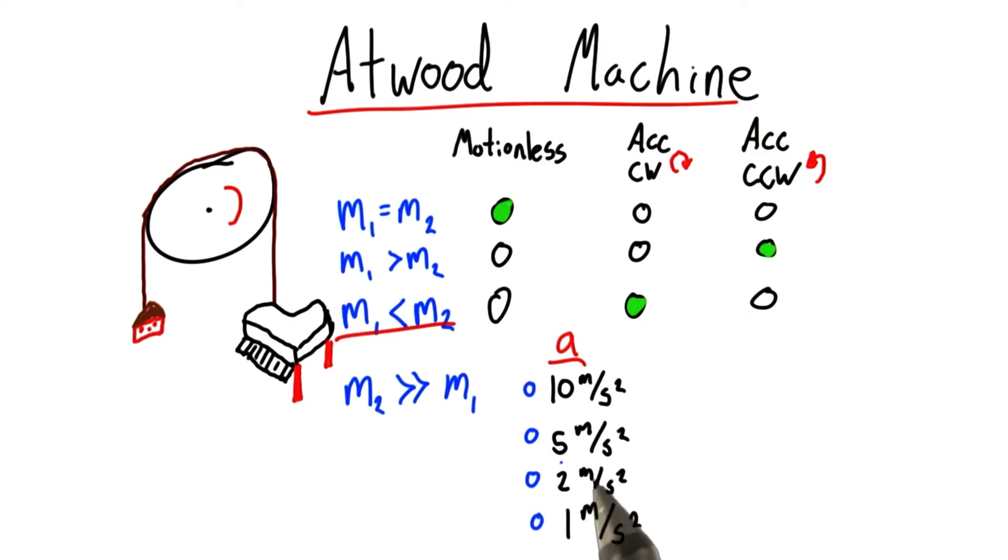Is it 10, 5, 2, or 1 meter per second squared? I want you to remember that a free-falling object accelerates downwards at 10 meters per second squared.